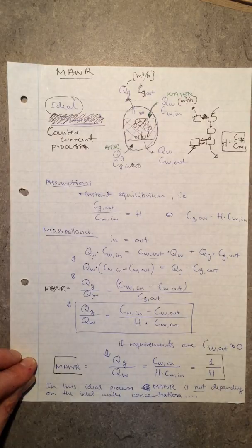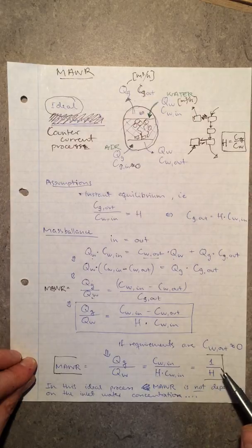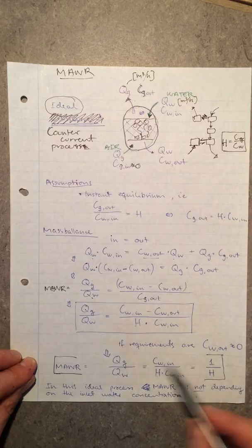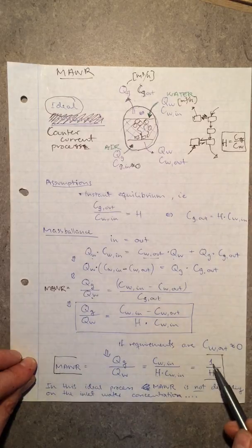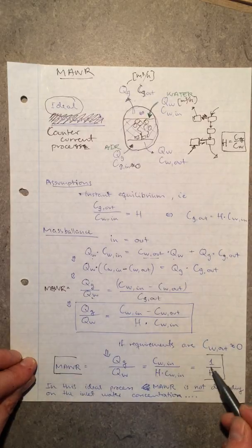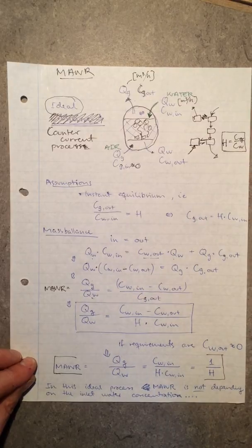It ends up that the minimum air-to-water ratio is 1 over Henry's constant. This is an ideal situation — if I have super-ideal counter-current conditions, the flow of air only needs to be 1 over Henry's constant times the flow of water. So if Henry's constant is 1, I need a flow of air equal to the flow of water.